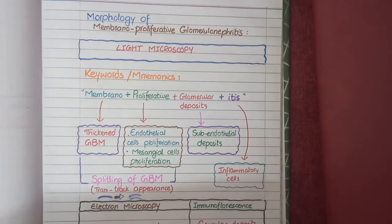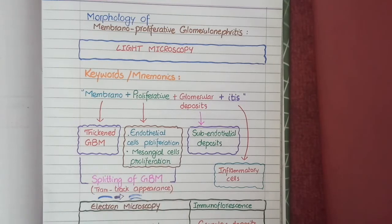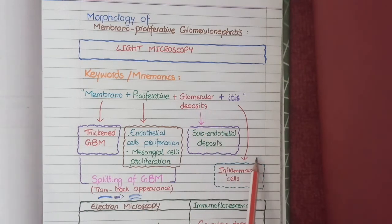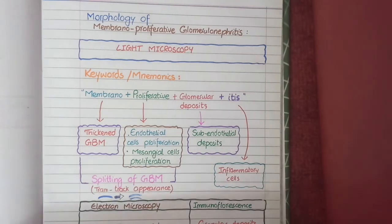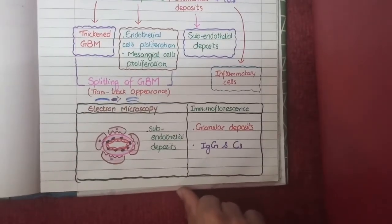To revise: on light microscopy you see thickened glomerular basement membrane with proliferating endothelial and mesangial cells, splitting of the glomerular basement membrane giving a tram track appearance, subendothelial glomerular deposits, and inflammatory cells including neutrophils and monocytes. These are the light microscopic features of membranoproliferative glomerulonephritis.